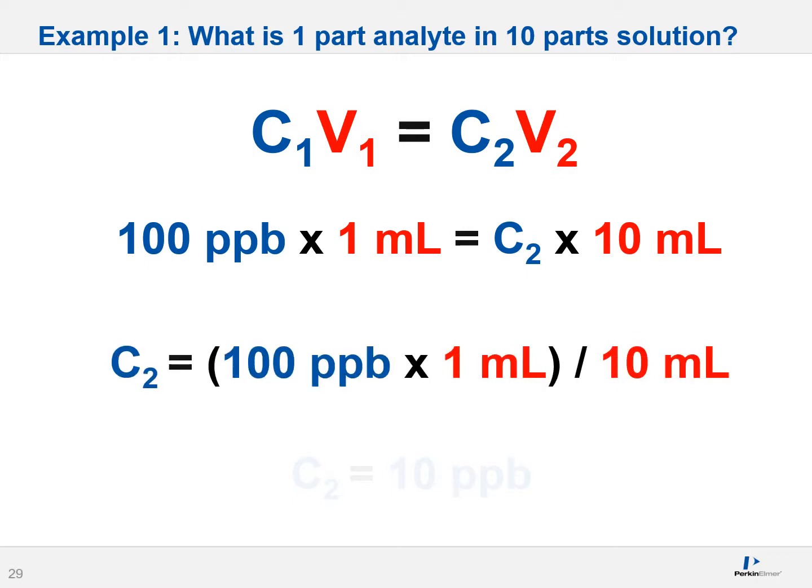Use algebra and reformat the equation for C2 as a target variable. And eventually, you end up with 10 parts per billion as your final concentration. This is saying that if I start with a 100 ppb solution, take 1 ml of this 100 ppb solution and dump it in effectively about 10 mls of final solvent, my new solution is going to be 10 parts per billion.